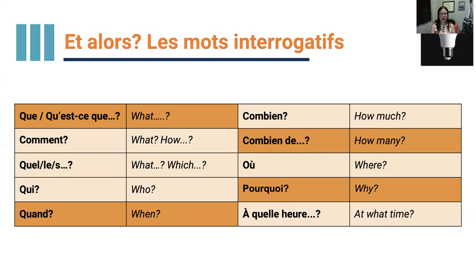Quel — which or what — you saw these in previous lessons. Quel type d'art? What type of art? In French, you have to say 'which type of art.' Qui? Who? Qui est-ce? Who is it? Quand? When? Combien? How much? Combien de? How many? Combien de peintures? How many paintings? Où? Where? Où est-ce qu'on peut voir une performance artistique? Pourquoi? Why? Et à quelle heure? At what time. There are even more question words, but let's start with these.